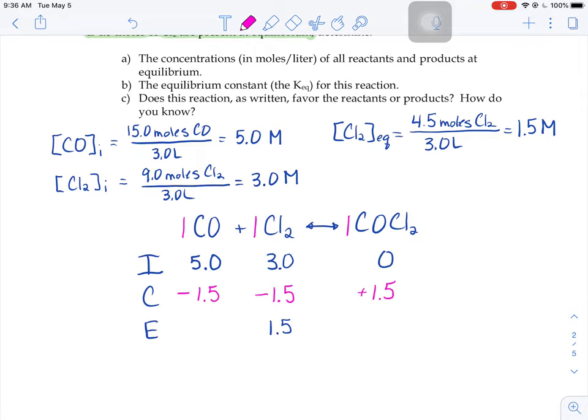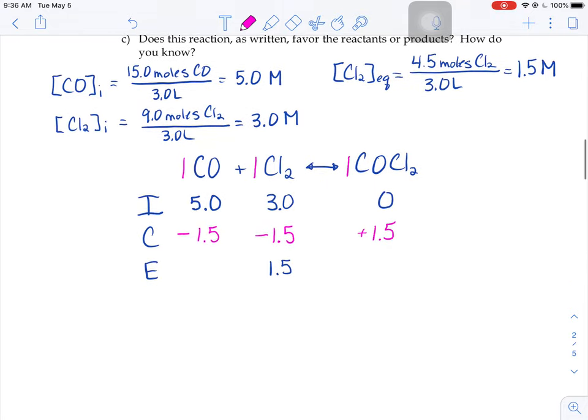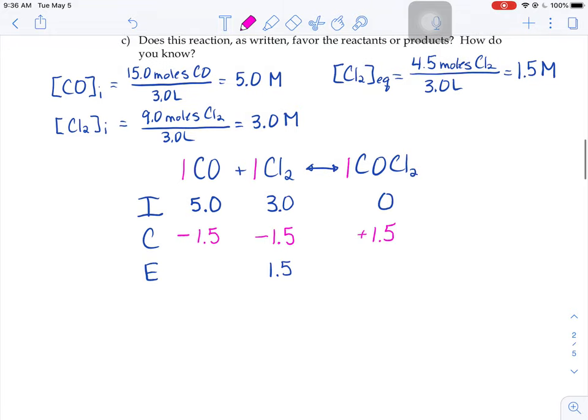Now I'm going to use those change values to figure out the equilibrium concentrations of the carbon monoxide and the COCl2. So 5 minus 1.5 is 3.5. And 0 plus 1.5 is 1.5. So up above in part A,